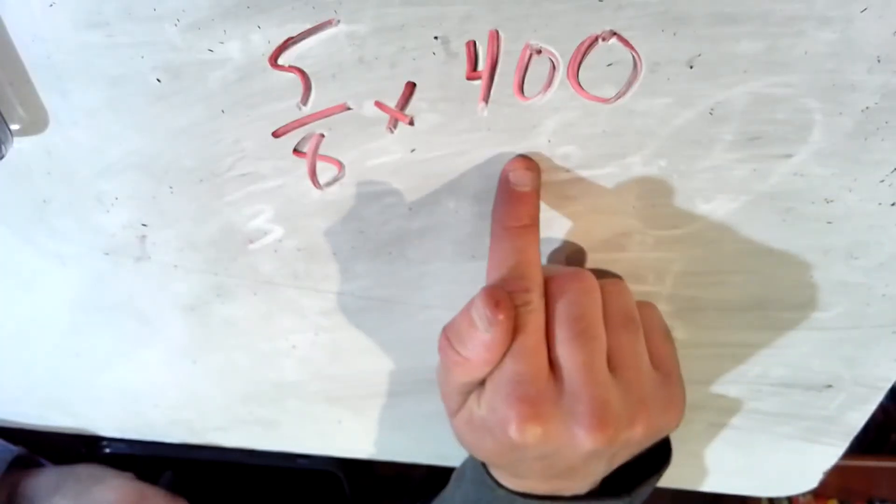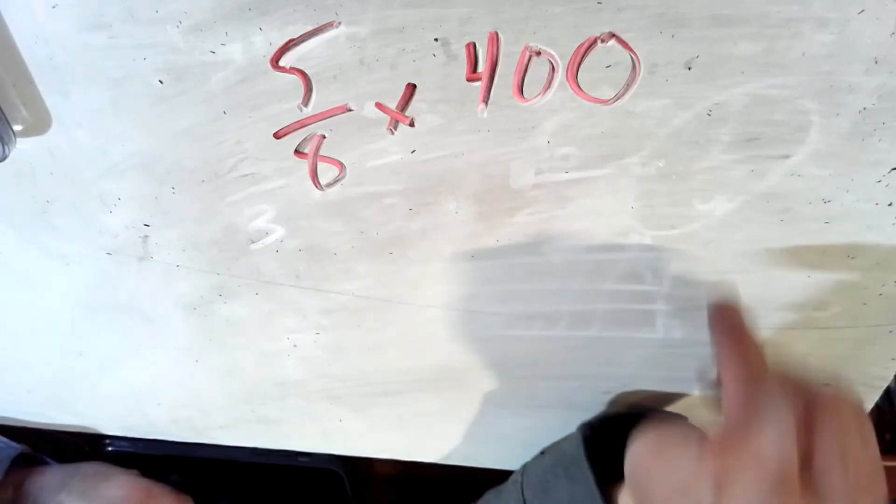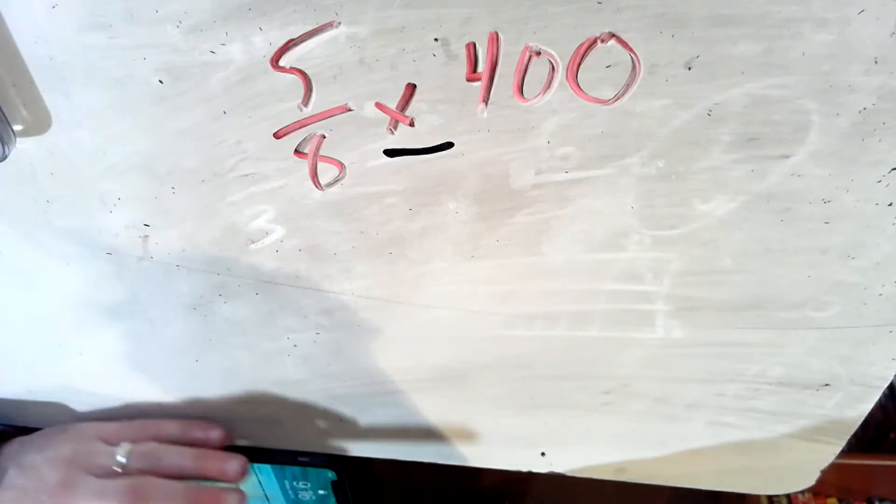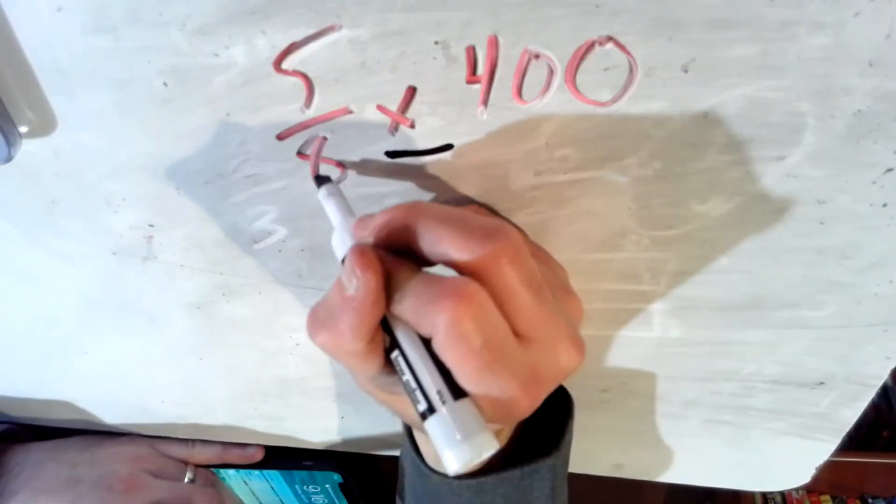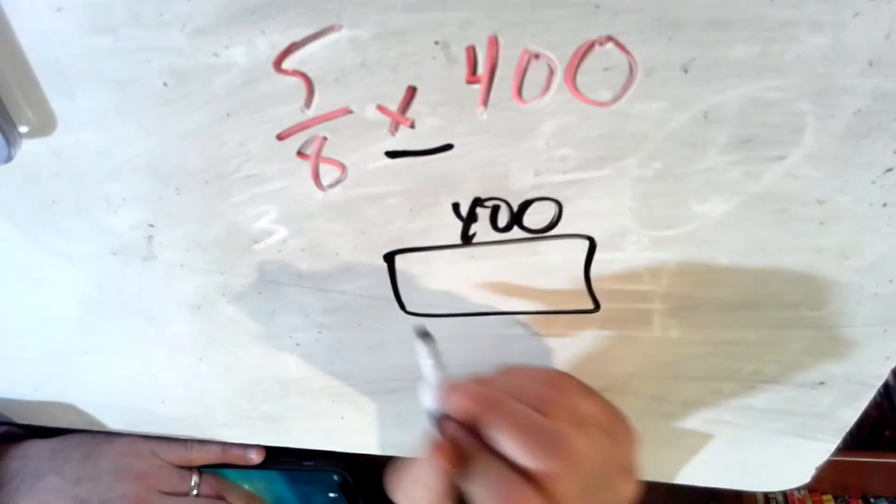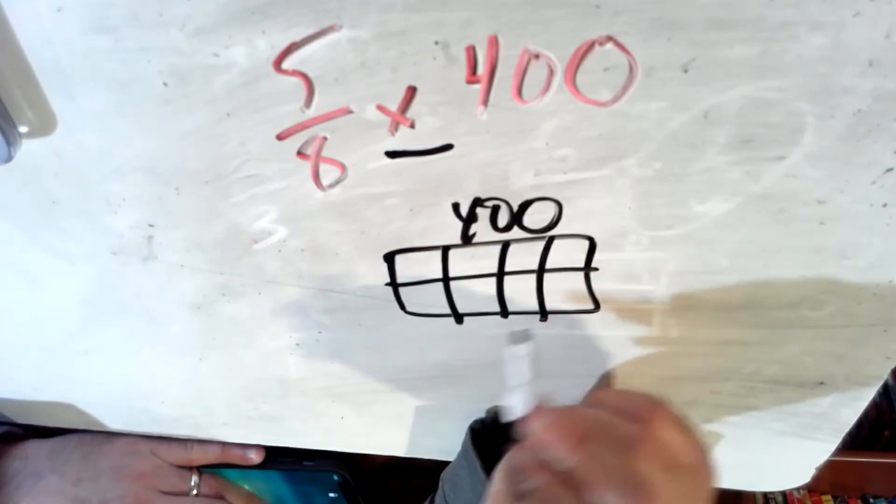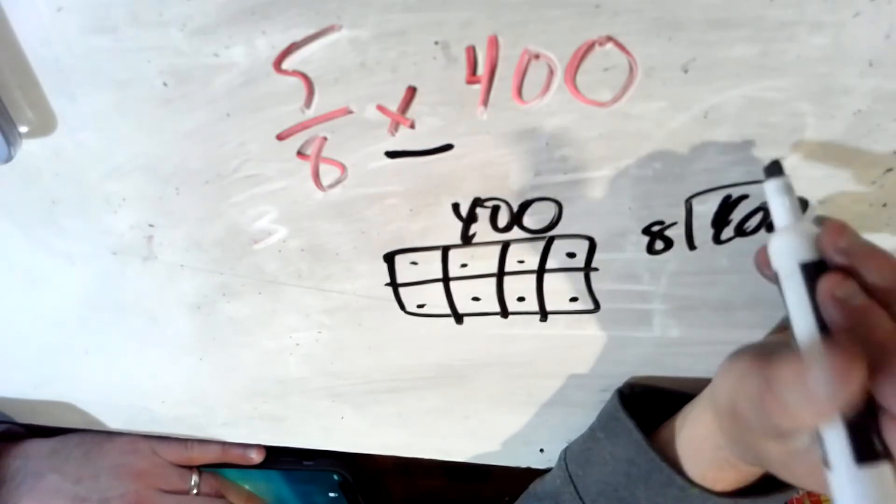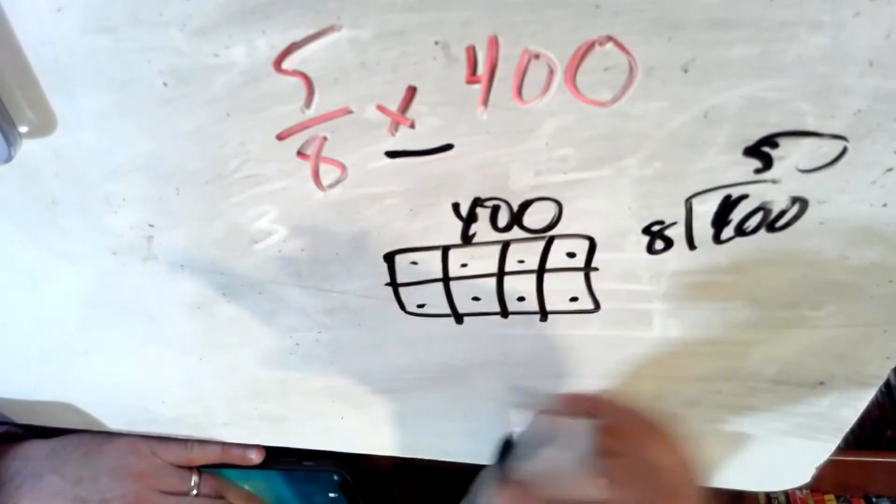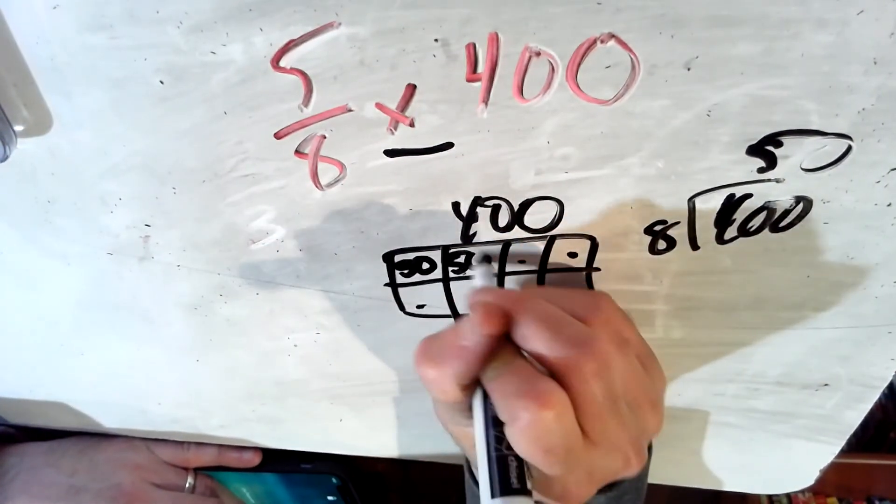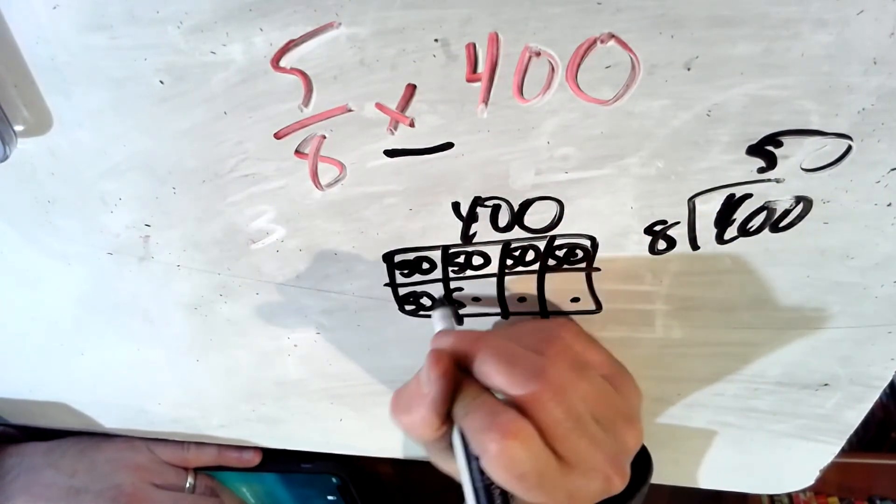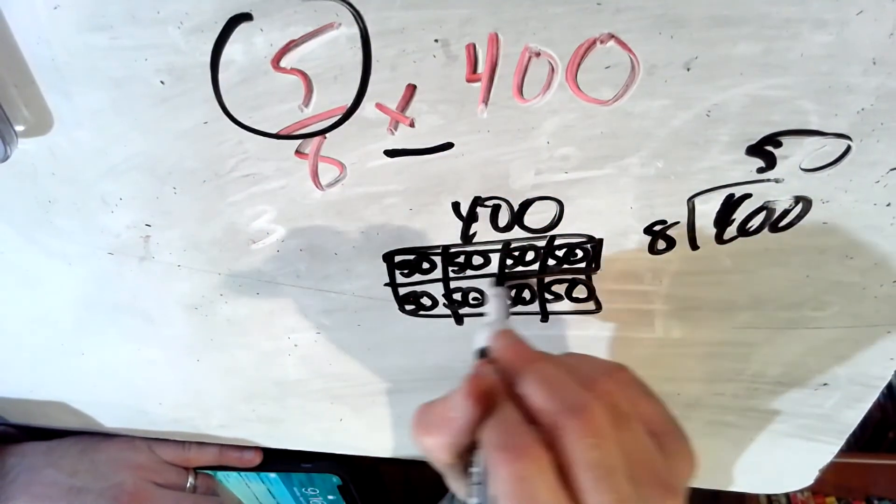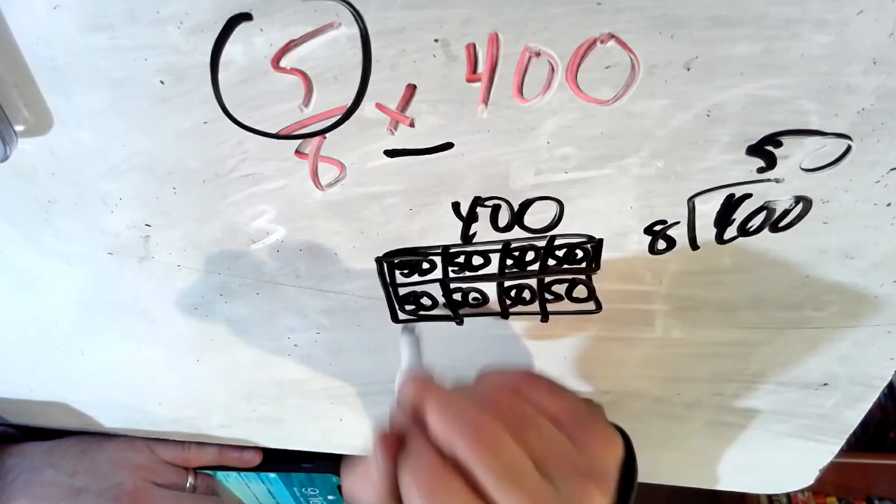But let's also do some multiplying fractions times whole numbers. 5 eighths times 400. Here it says the spectacular bike race is 400 miles long. Tyler has completed 5 eighths of the race. Find out what 5 eighths of 400 is. So here we could say, let's find out what one eighth of 400 is. 1, 2, 3, 4, 5, 6, 7, 8. One eighth of 400. Eight goes into 4 five times. So it goes into 40 five times. Eight goes into 40 five times. So each of those eighths is worth 50.